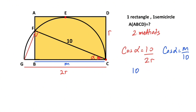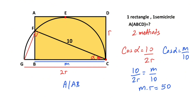Therefore, if we equalize these two expressions, 10 over 2r must equal m over 10. That means m times r equals 10 over 2r, so the area of rectangle ABCD equals m times r, which means the area equals 50 square units.